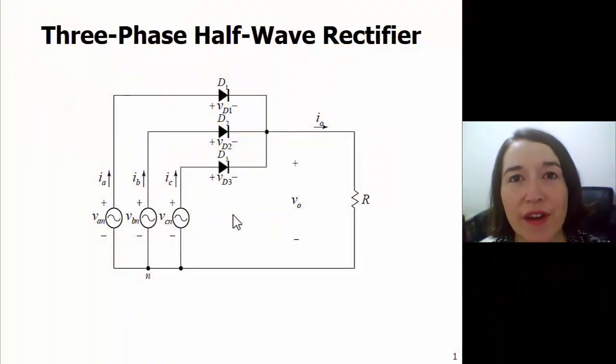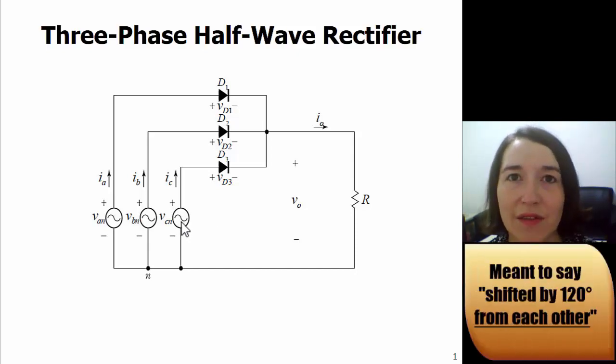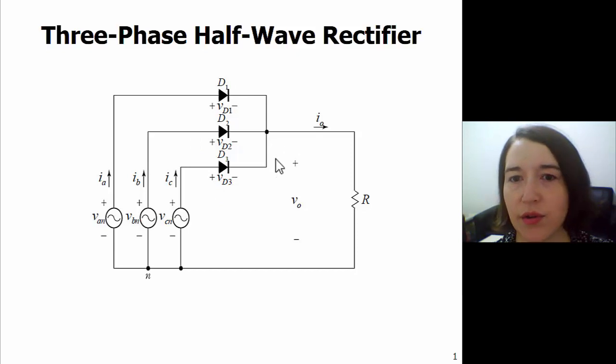Here we're talking about a three-phase half-wave rectifier and you can see this circuit is shown here. We have three input voltages and they're all phase shifted by 120 degrees and then we have each of them connected with a diode to the output here. So this is a circuit and we're going to go through the basic modes of operation.